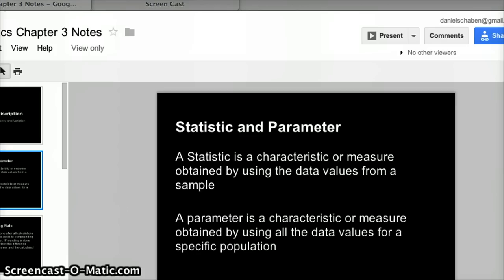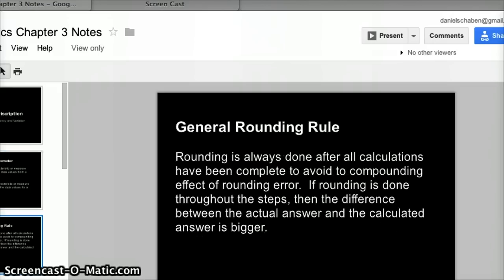A statistic is a characteristic or measure obtained by using data values from a sample. If you're polling the whole population in the United States, you're not going to ask everybody the question—that's too costly—so you're going to randomly sample them. A parameter is a characteristic or measure obtained from the whole population. If you're at a small class D school in Nebraska with less than 30 or 40 students, you can ask every student what they think about something.